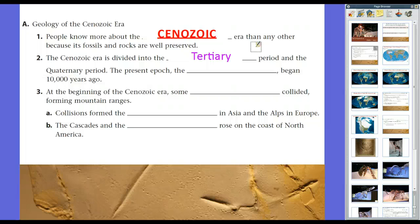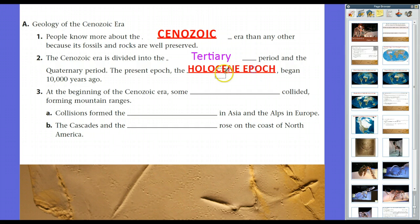The quaternary period begins 10,000 years ago. The present epoch, known as the Holocene epoch, began 10,000 years ago. So we live in the Phanerozoic Eon, the Cenozoic Era, the quaternary period, and the Holocene epoch.